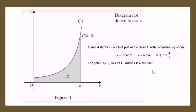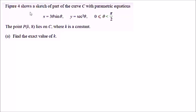My advice when trying to find the value of k is to look at the parametric equations, plug in what you know, and work from there. So we can say straight away that when x equals k, this equation reduces to k equals 3θ sinθ. So far we can't do much more with this, so we'll leave it like that.